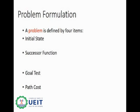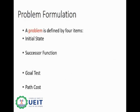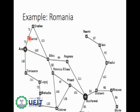Problem formulation involves deciding what actions and states to consider given the goal. A problem can be formally defined by four components: the initial state, successor function, goal test, and path cost. The initial state for Romania is Arad — the starting point of the agent. The term successor refers to any reachable state from a given state by a single action. For example, from Arad we can reach Zerind by a single action, so Zerind becomes a successor of Arad.